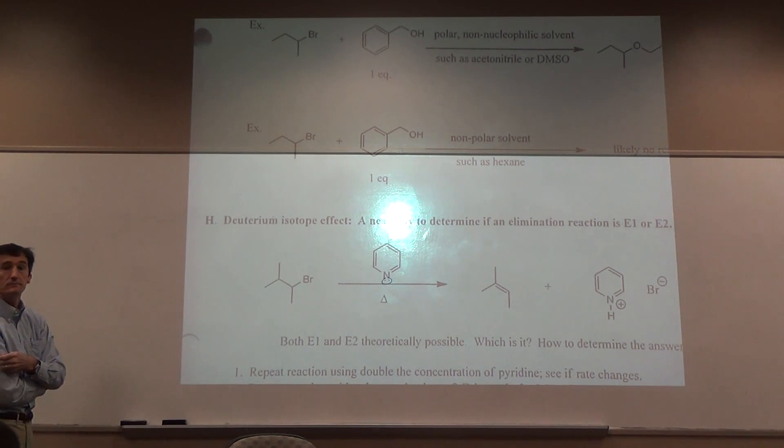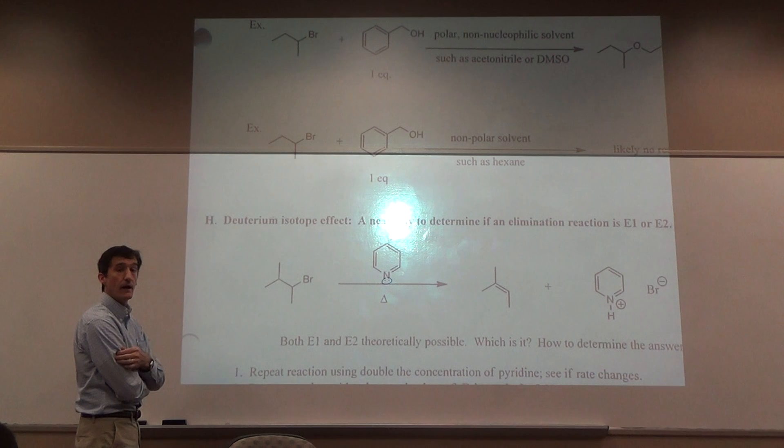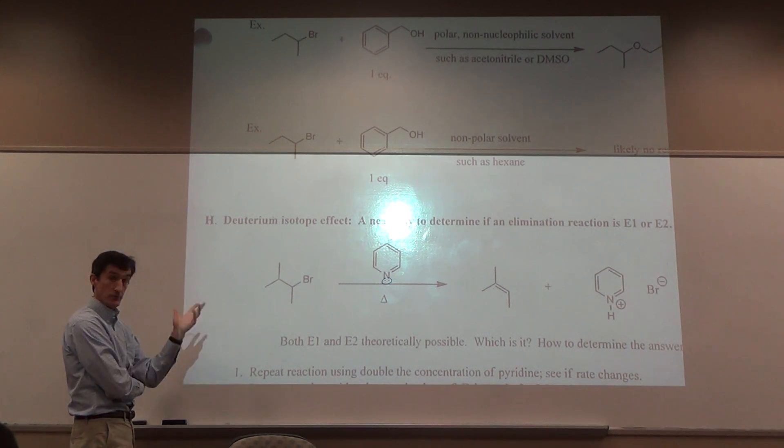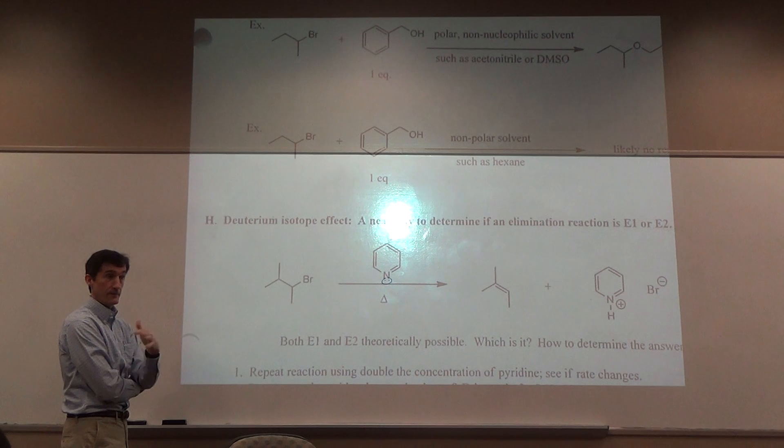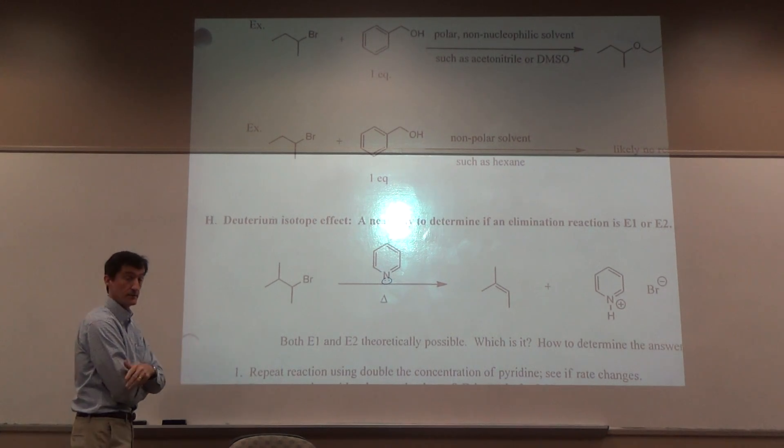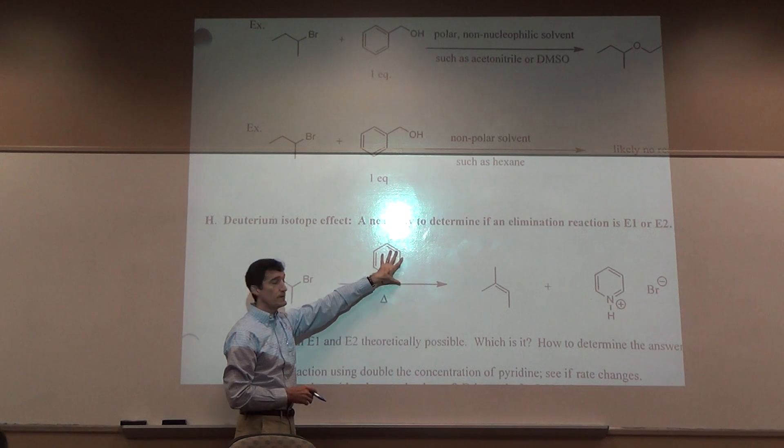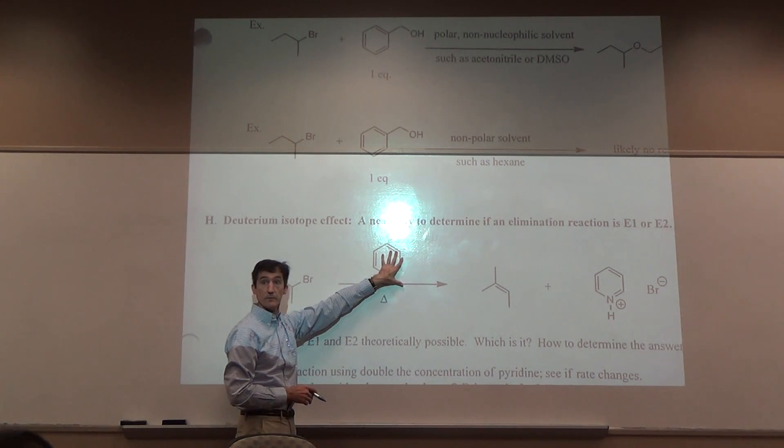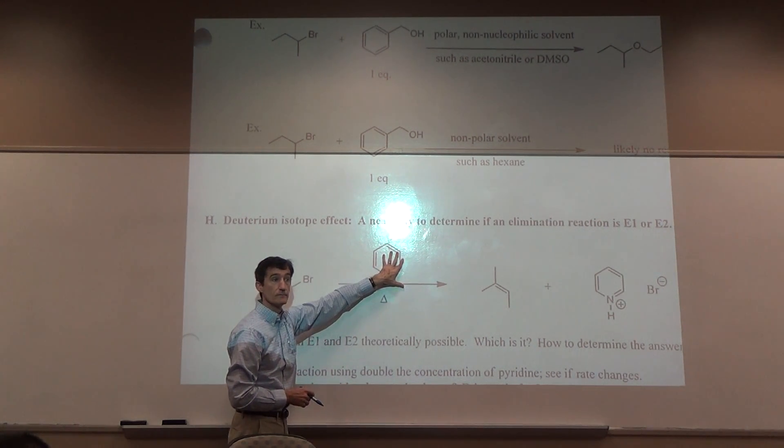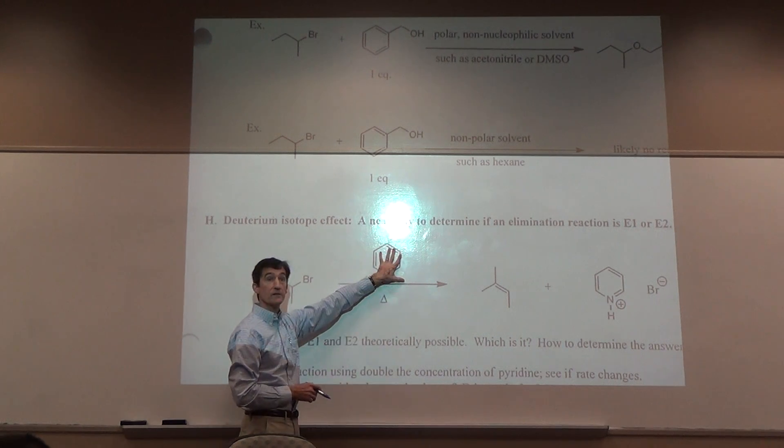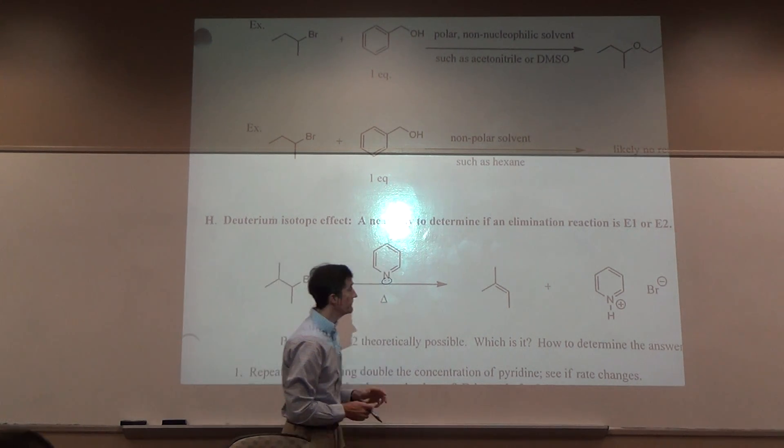So how would you develop an experiment to determine if it's E1 or E2? Add more of the base and see if the rate increases. Add more base, do the reaction one time with a certain amount of base, then come back and maybe double the base and double this, see if the rate changes. What if you double this and the rate doubles? What's the mechanism? E2. What if you double this and the rate doesn't change? E1.